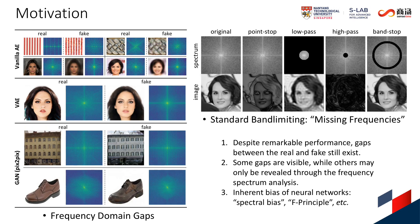Despite the remarkable success in image reconstruction and synthesis, gaps could still exist between the real and generated images. Through spectral analysis, we show that gaps in the frequency domain may be a common issue for typical generative models. Previous studies suggest that the gaps are due to the inherent bias of neural networks towards low-frequency functions, for example, spectral bias and F-principle.